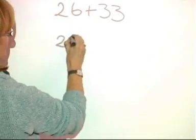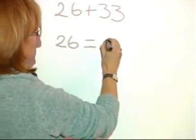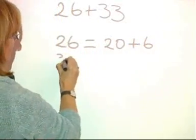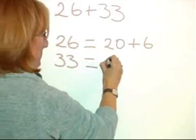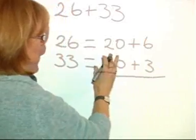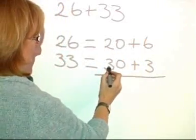We can do this on paper as well. 26 partitions into 20 and 6, and we can partition 33 into 30 and 3. Let's add those bits together.